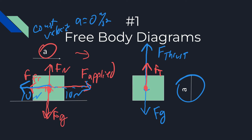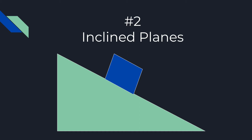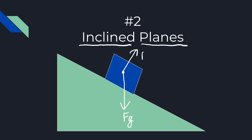Throughout this video we're going to be making lots of free bodies, but you need to know the basics. The second most common problem is the incline plane — you should be guaranteed to get an incline plane problem, most likely multiple choice. For the free body, we have gravity coming straight down as usual. The normal force is always perpendicular to the surface, so our normal force is going to be drawn perpendicular.